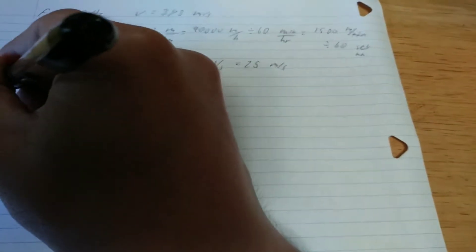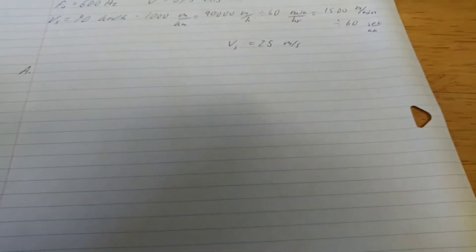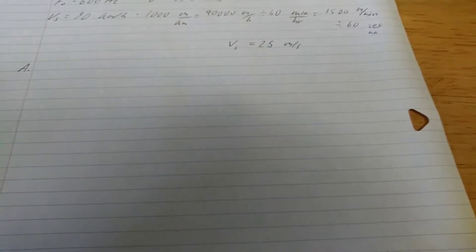So now that we know the velocity of our source, we can move on to doing the problems. Problem A is finding the frequency heard by a person standing on the ground in front of the car.